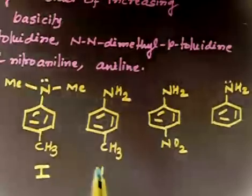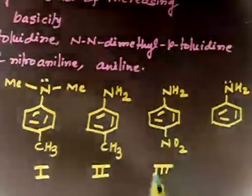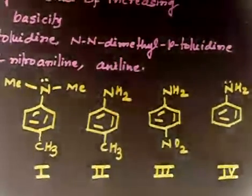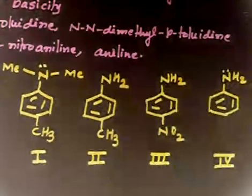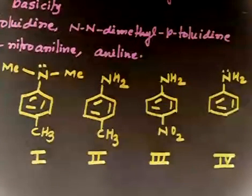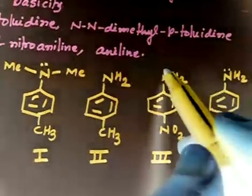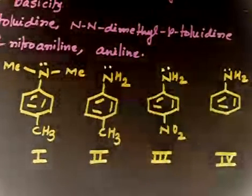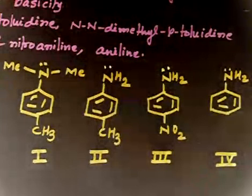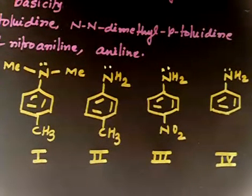This is para-toluidine, this is N,N-dimethyl-para-toluidine, this is para-nitroaniline, and this is aniline. Let me number these: one, two, three, four. Now arrange them in order of increasing basicity. Take one minute, see the resonance of the lone pair, then give the answer.